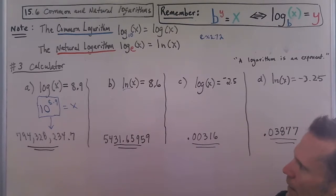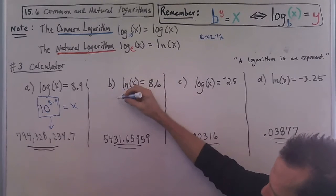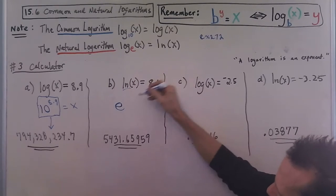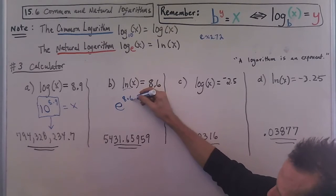Okay, so here we remember that ln is a log base e, so I have e raised to the 8.6 power and that's equal to X.